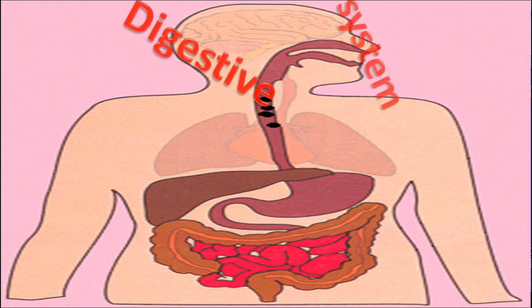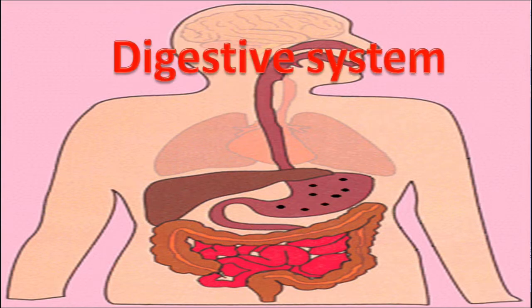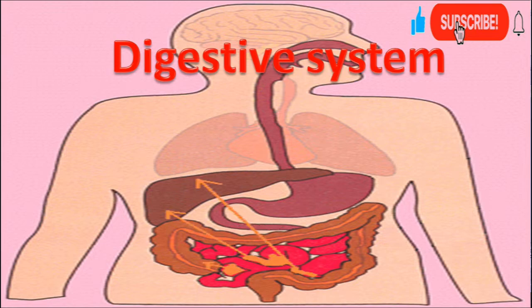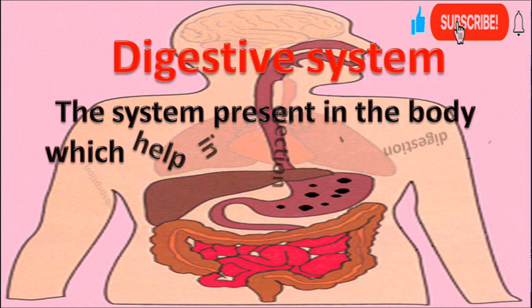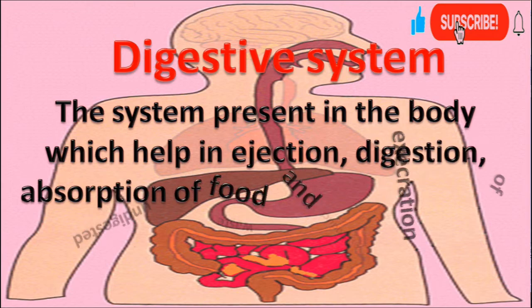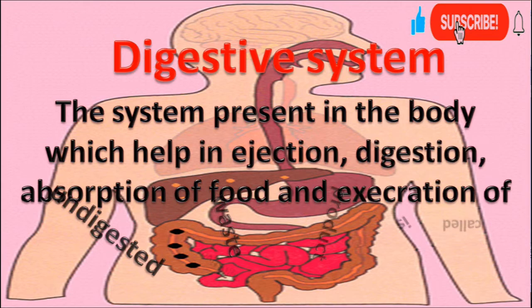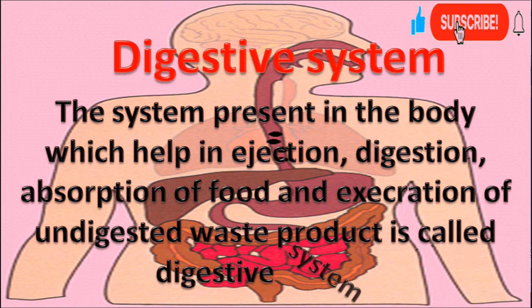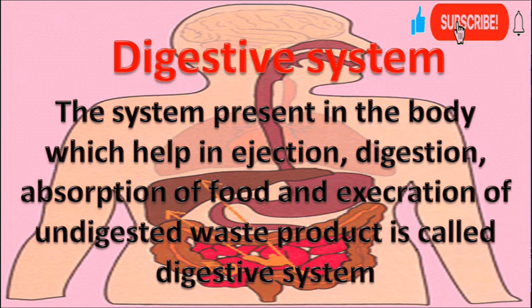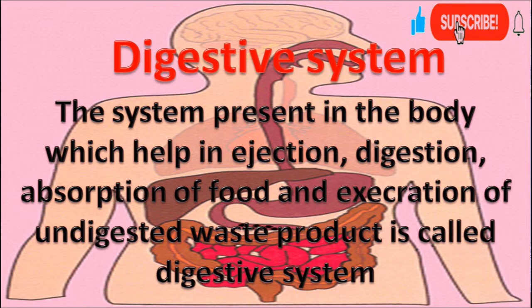Digestive System. The system present in the body which helps in digestion, absorption of food, and excretion of undigested waste product is called the digestive system.